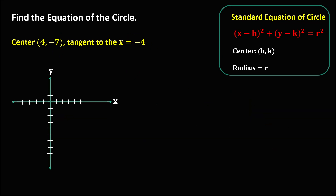For the next given, x is positive 4 and y is negative 7, counting 1, 2, 3, 4, 5, 6, 7 — this is the point of the center. Since tangent to x equals negative 4, and this is x equals negative 4, we have the tangent line. To find the radius from the center to the tangent line, counting: 1, 2, 3, 4, 5, 6, 7, 8 — so the radius is equal to 8.